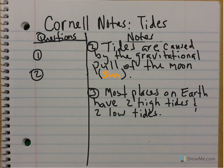The last point, number three, is that most places on earth have two high tides and two low tides. As the moon moves and rotates around the earth, it creates high tides and low tides — usually two high and two low per area around the world. Go ahead and make up a question for that last one.